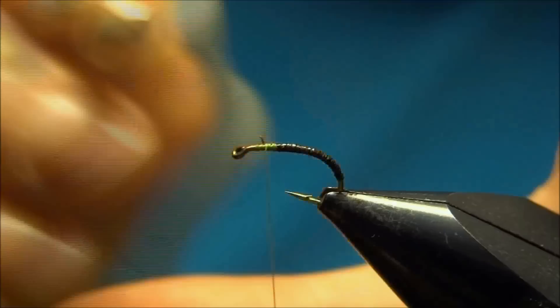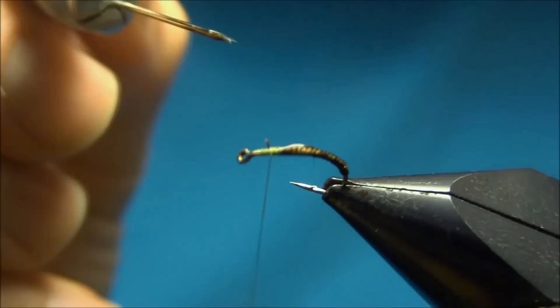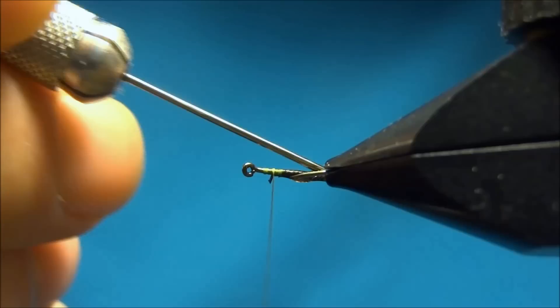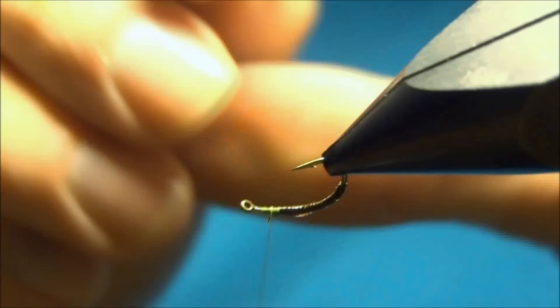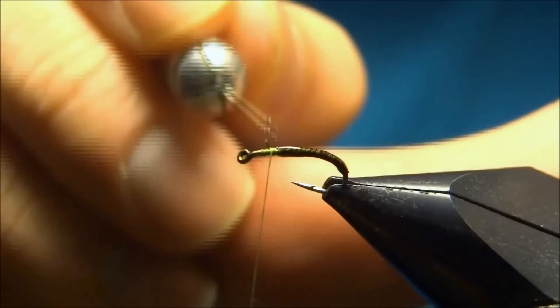Now the next step is to put on some varnish. Just make a thin coat of varnish all over the body. This will secure the peacock and also make it look a little nicer. Your fly will definitely last longer.